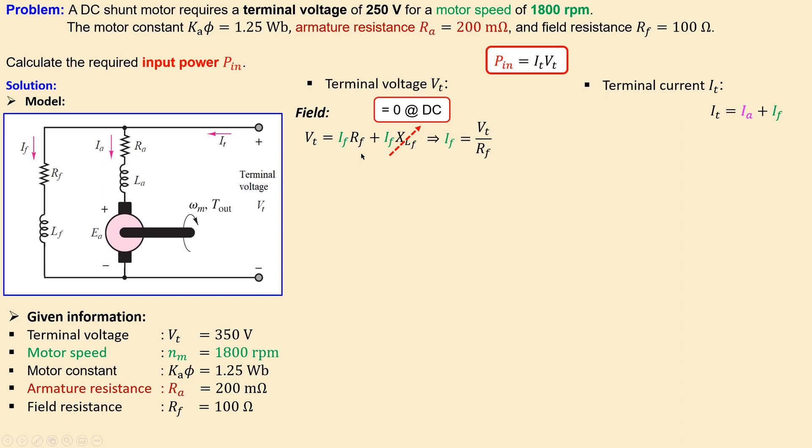That will simplify this expression and we can just calculate now using this expression the field current because we know the terminal voltage and we also know the field resistance. That will be then 250 over 100, which is 2.5 A.